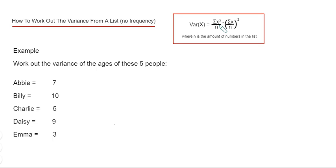So let's do Σx first of all. Σx just means the sum of all our x values here. So if we go 7, add 10, add 5, add 9, add 3, that gives a total of 34.